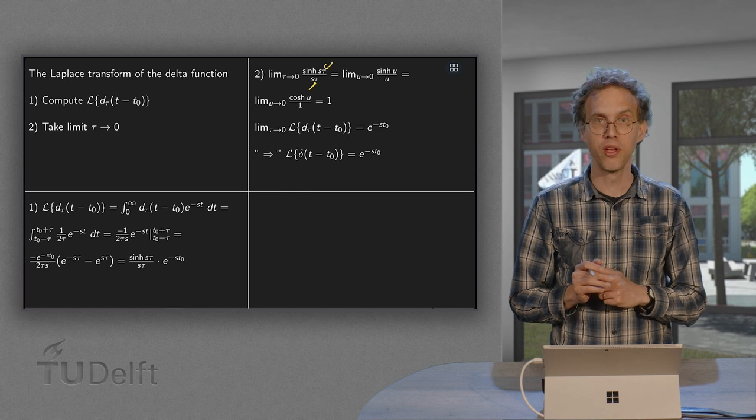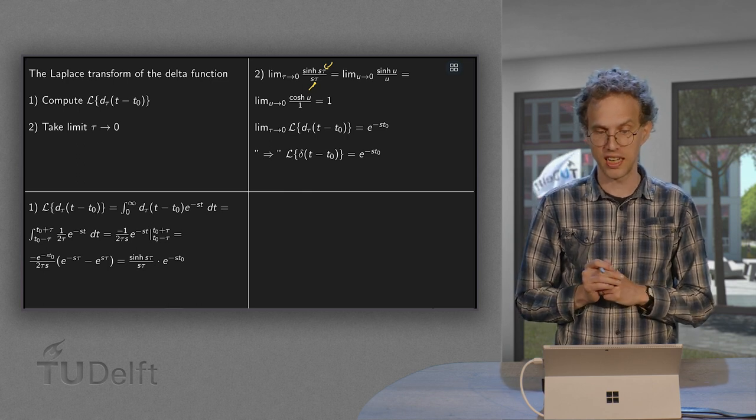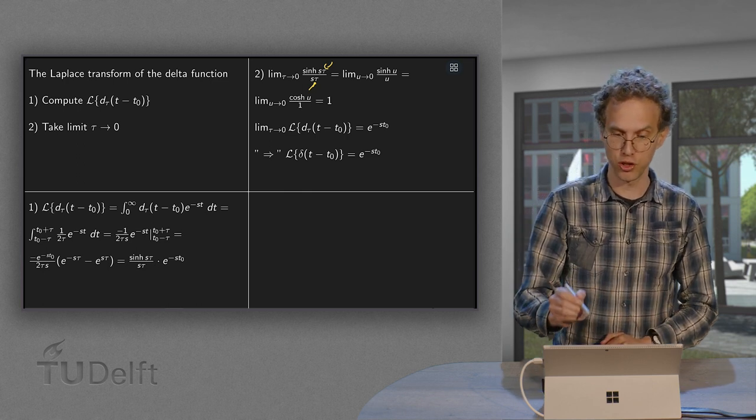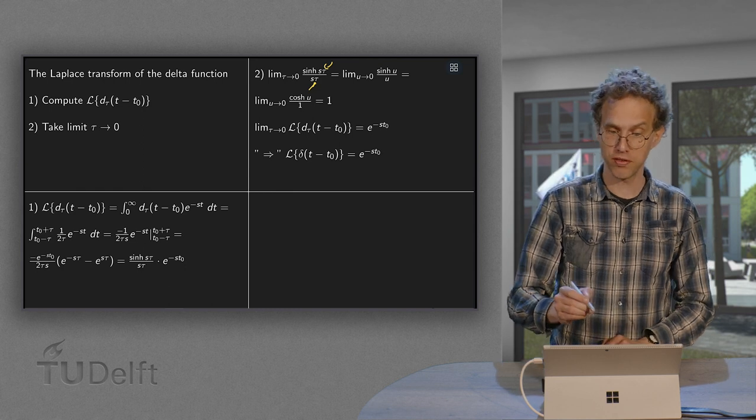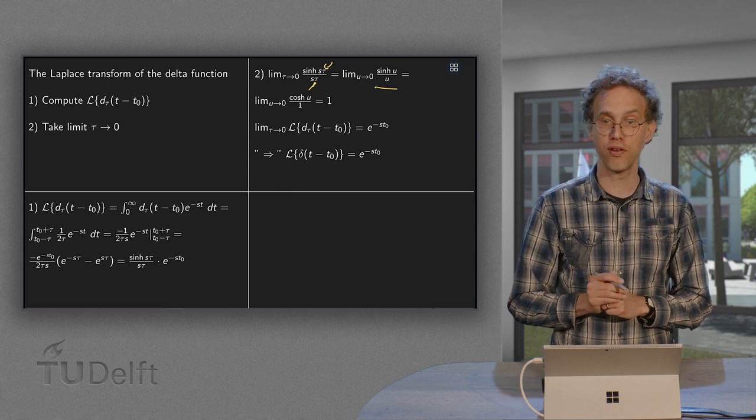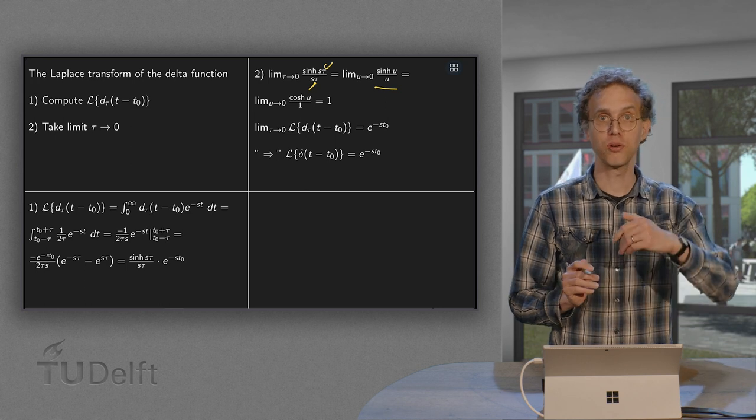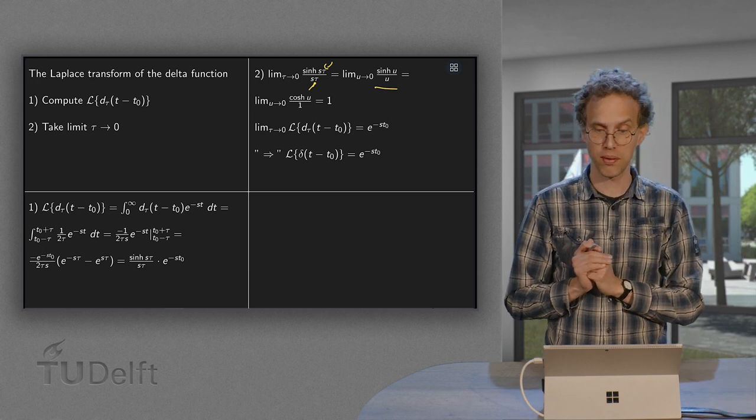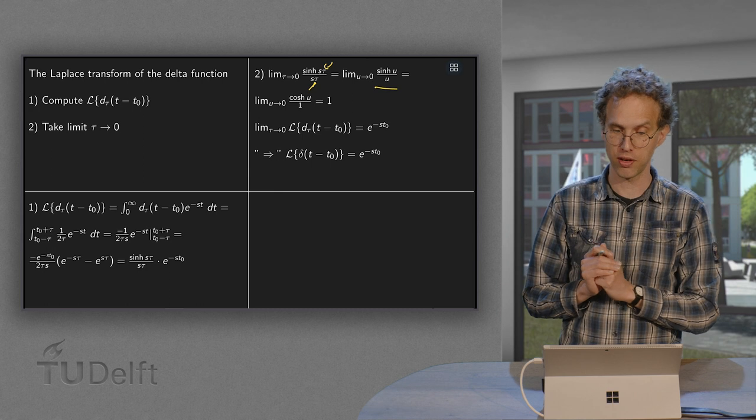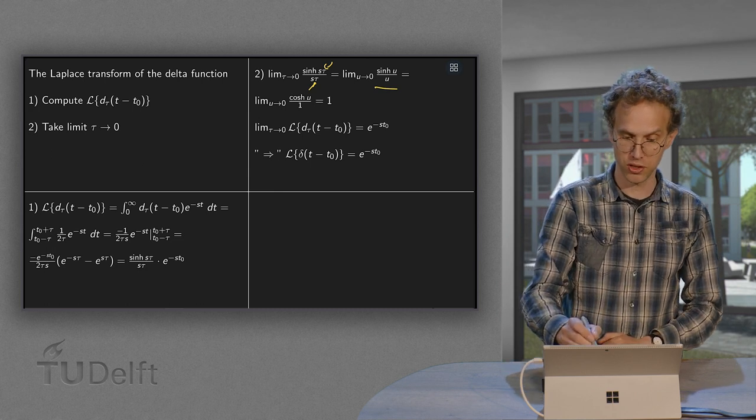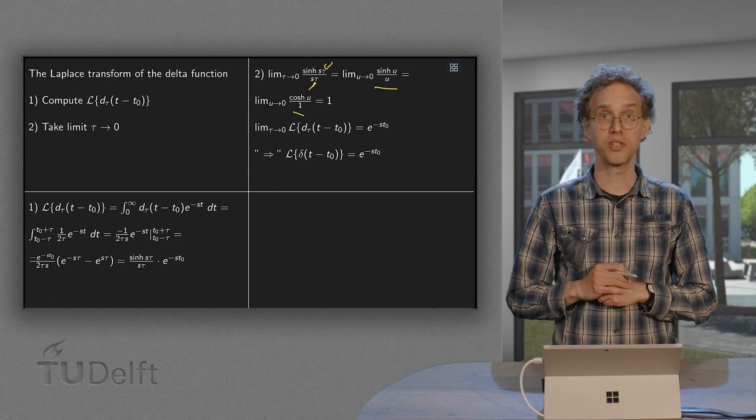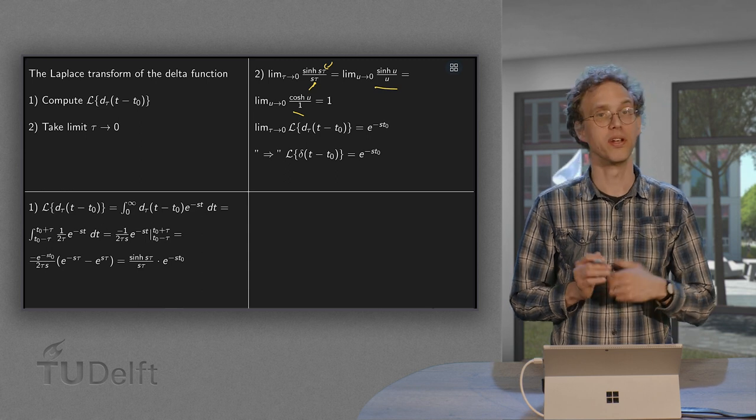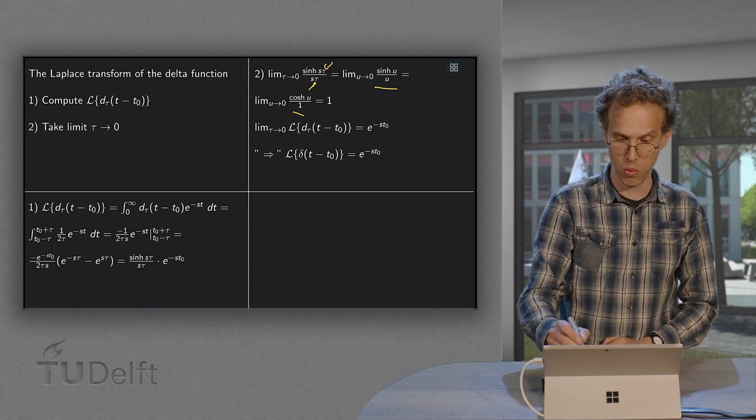We want to use L'Hopital's rule. So first of all, we set s times τ equals u to clean up some of the mess. So then we have a sinh of u over u. Use L'Hopital's rule. The derivative of sinh u equals cosh u. The derivative of u equals one. So we have cosh u divided by one. We can take u to zero. Gives us just a one.